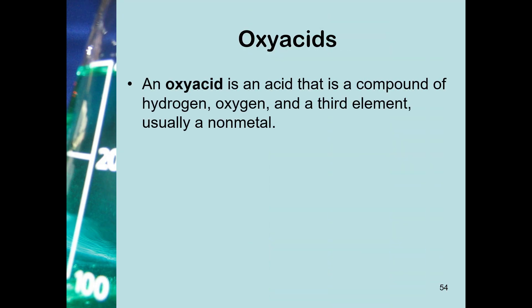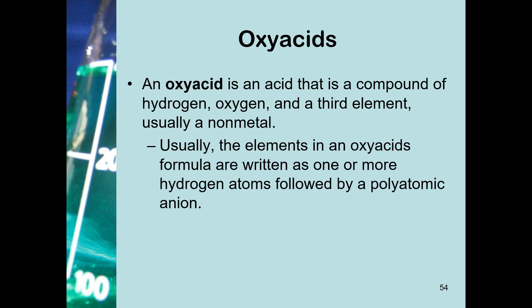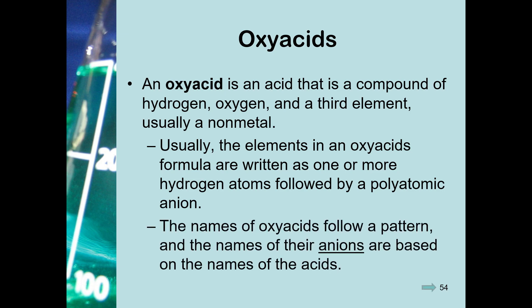If it's not a binary acid, we have acids called oxyacids. An oxyacid is a compound of hydrogen and oxygen plus some other third element, usually one of the nonmetals on the right side of the periodic table. The elements in an oxyacid formula are written as one or more hydrogen atoms followed by a polyatomic anion, since most polyatomic anions contain oxygen. The names of oxyacids follow a pattern based on the names of their anions, so if you know the anion name, it's easy to name the oxyacid.